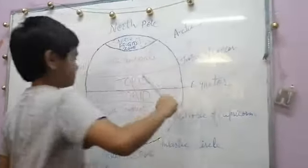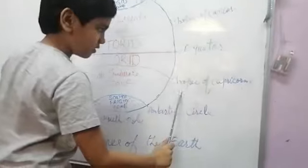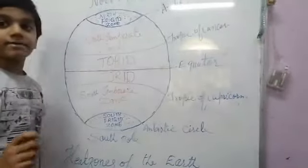Now the last type of heat zones. Torrid zone, Torrid zone lies between Tropic of Cancer and Tropic of Capricorn. But remember one thing.